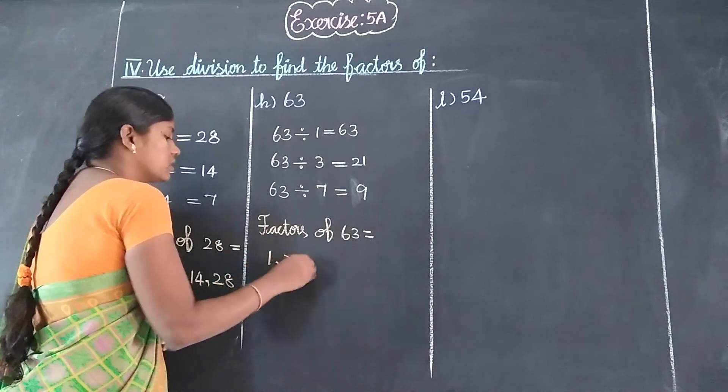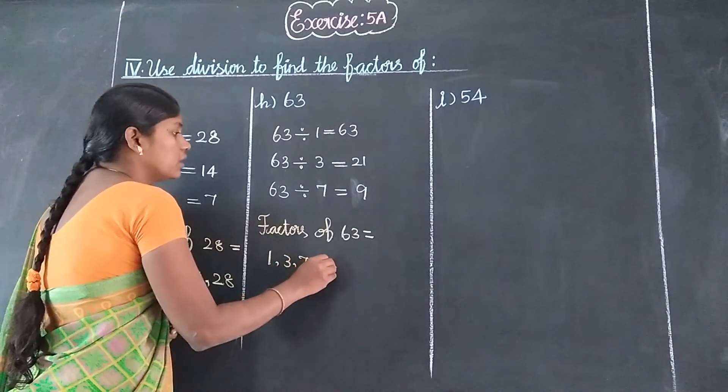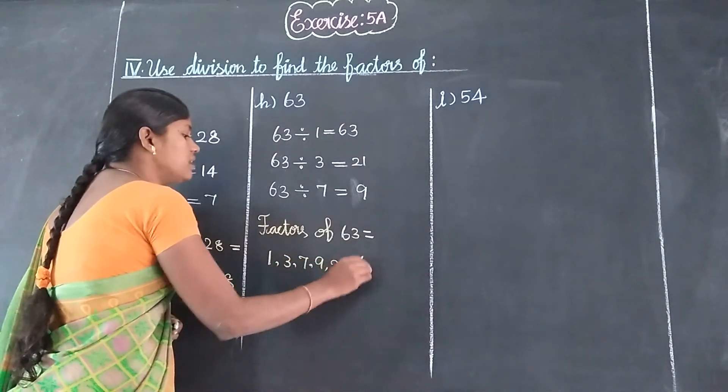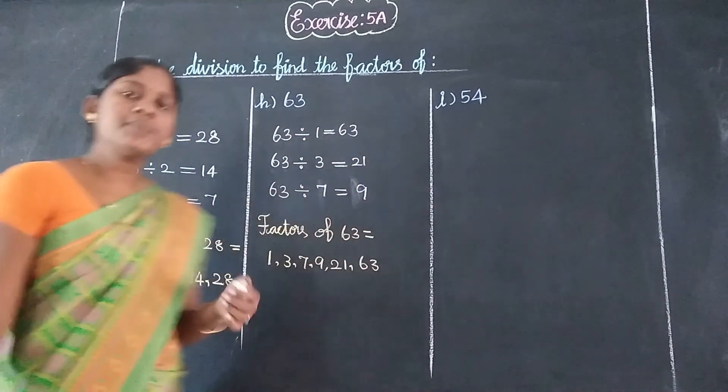Nine table, yes. Factors of 63 are 1, 3, 7, 9, 21, and 63.